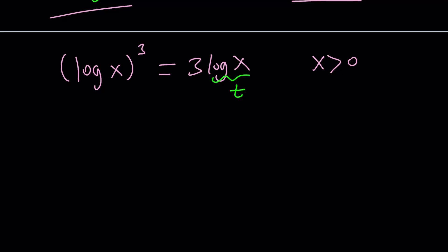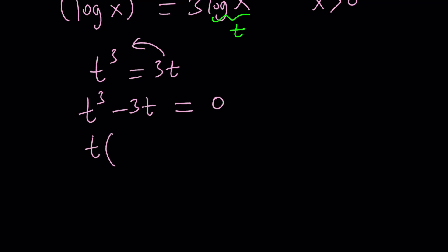So instead, we're going to do the following. t cubed equals 3t. We need to turn it into a polynomial. Let's subtract. t cubed minus 3t equals 0. And then factor t out. And now we have three solutions.